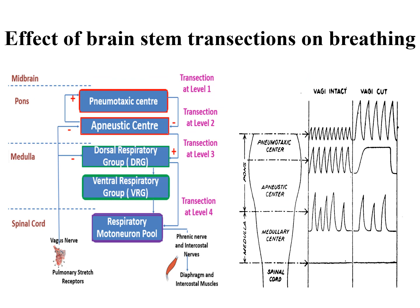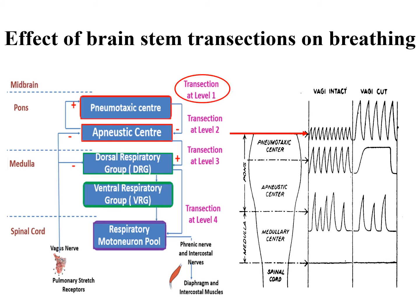To appreciate the role of each part of the respiratory center, experimental evidence has been provided through transection of the brainstem at different levels. Transection at level 1 at the upper pons, leaving the pneumotaxic center intact, does not affect respiration. This is because all respiratory centers are intact; therefore, the pons and medulla contain the essential neuronal elements for respiratory rhythm. When the two vagus nerves are cut at this level, respiration becomes deep and slow.